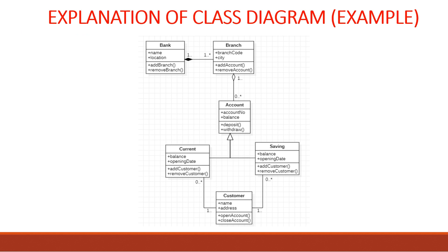Now we will see an example class diagram of a system. We have taken the example of a banking system and its class diagram is shown. There are six classes, each with its own attributes and functions. There is a composition relationship between branch and bank, meaning branch cannot stand alone without bank, and multiplicity shows one bank can have one or more branches. There is aggregation between branch and account, with multiplicity showing one branch can have zero or more accounts. There is a generalization relationship of account with current and saving accounts, as there are mainly two types of accounts. A customer class is associated with current and saving accounts, meaning a customer can make current and saving accounts, and multiplicity shows one customer can have zero or more accounts.